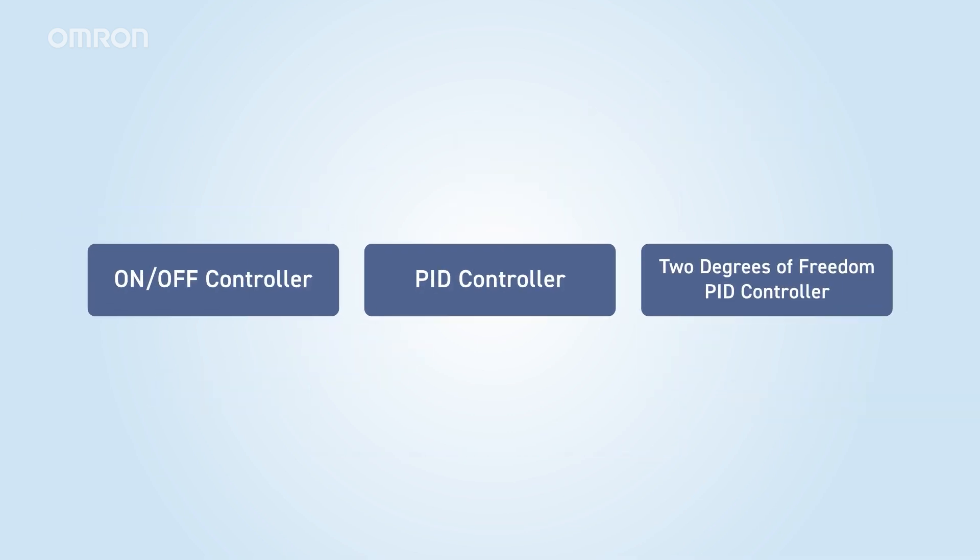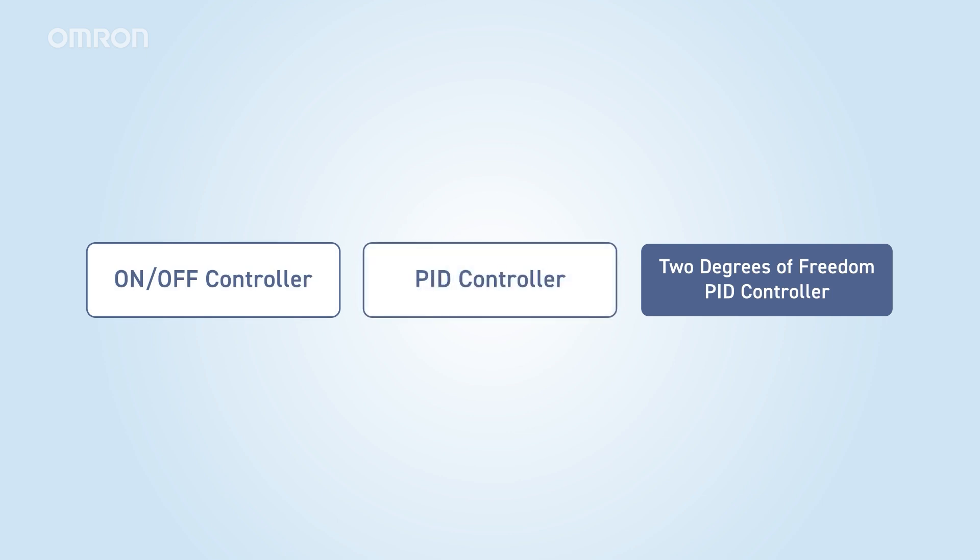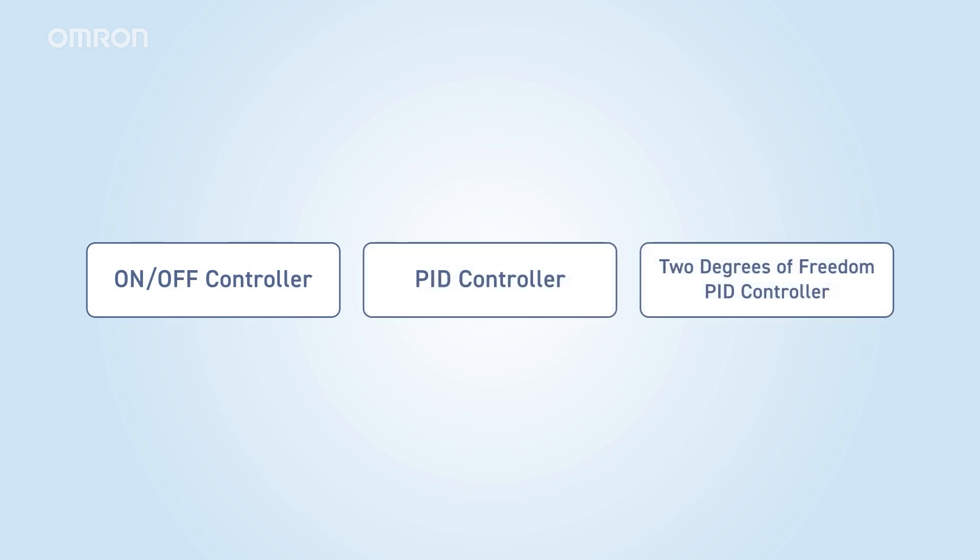Next, let's explore the control methods in more detail. First, I'll explain on-off and PID control, the most common techniques. Finally, I'll introduce the 2 degree of freedom PID, an enhanced version of standard PID.